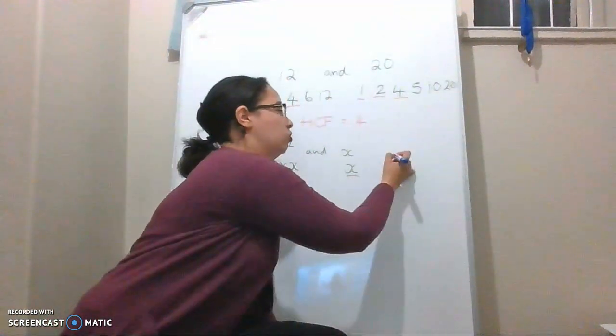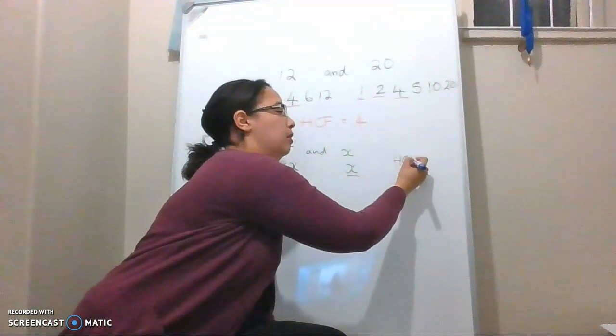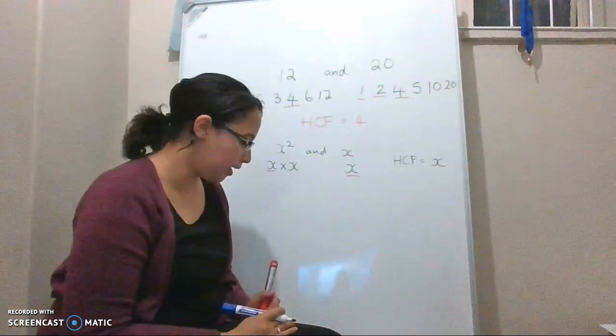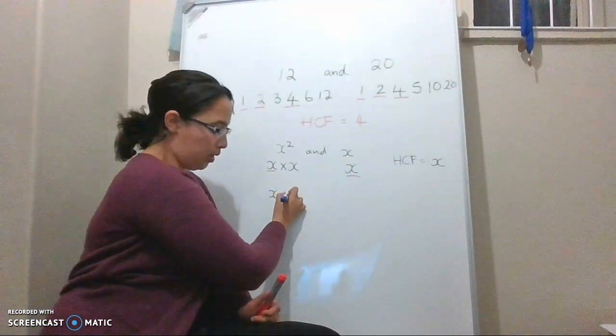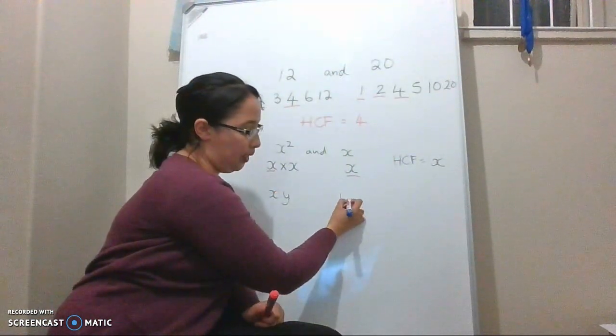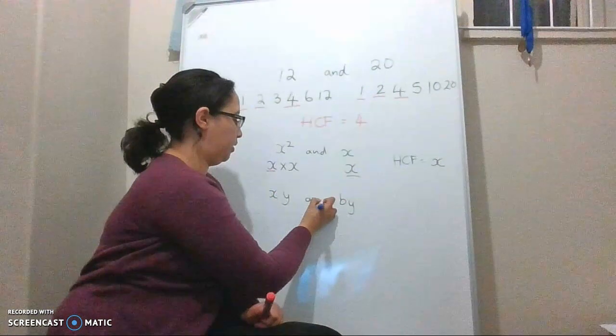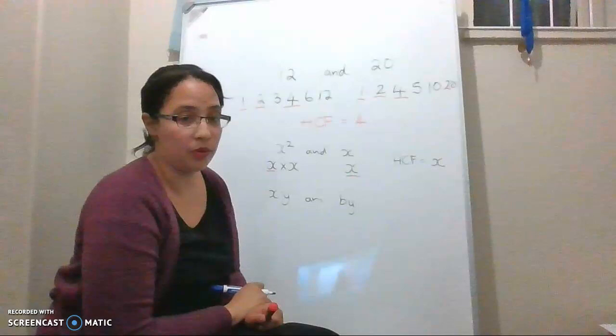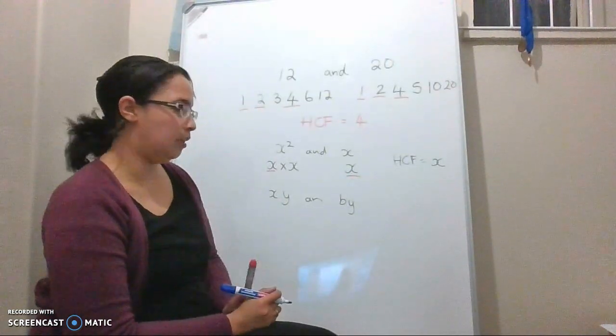So the highest common factor between these two will be x. Let's look at another two: xy or by. So this is x multiplied by y and this is b multiplied by y. If I compare these,